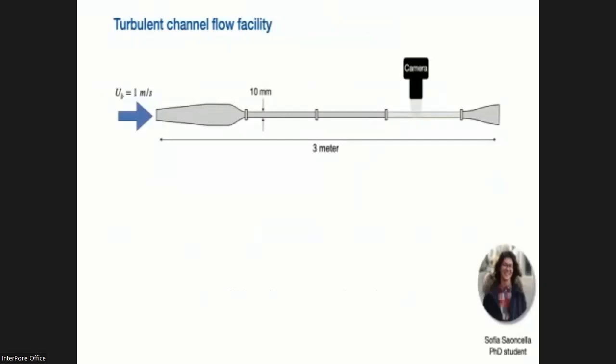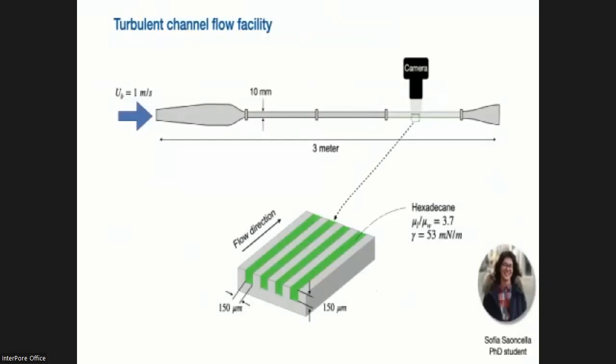So let's start with the work by Sophia, a PhD student in my group, and she built a channel which is 3 meters long and has a height of 10 millimeters. So it's a very special channel, and we have a 1 meter per second of water going through this channel. So we can create a significantly turbulent flow, Reynolds number, based on the bulk around 10,000. And then at the bottom of the test section, we install this surface which contains the streamwise grooves.